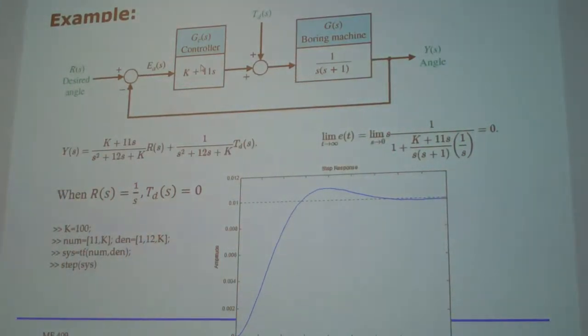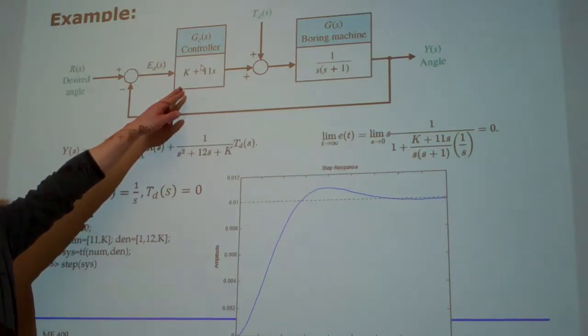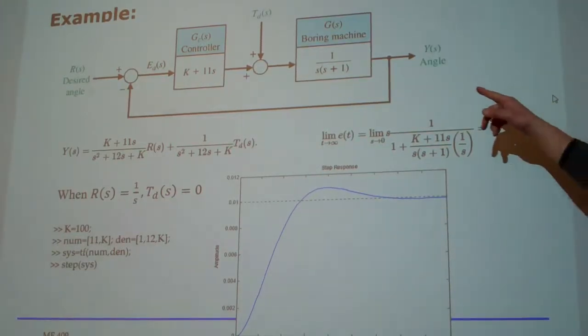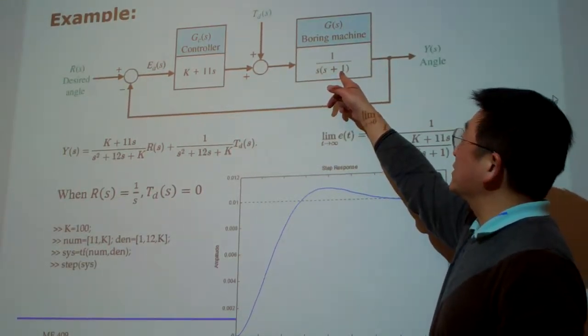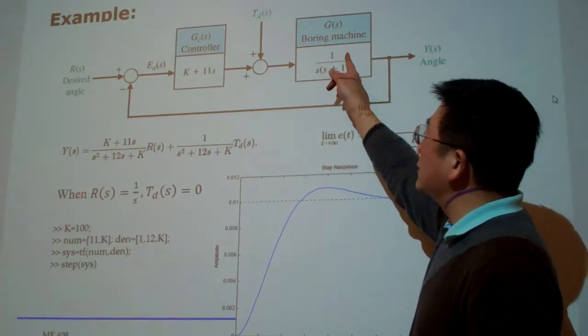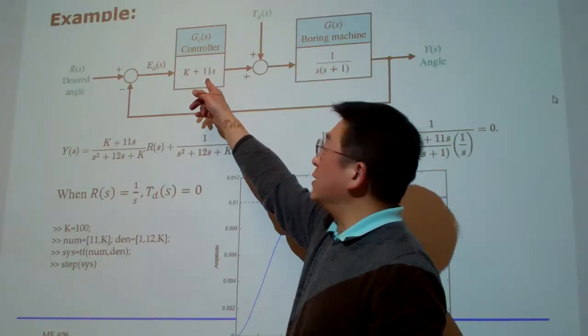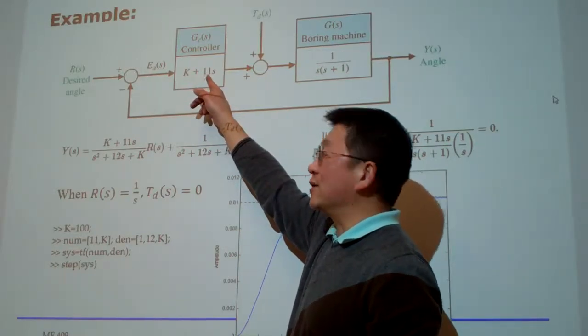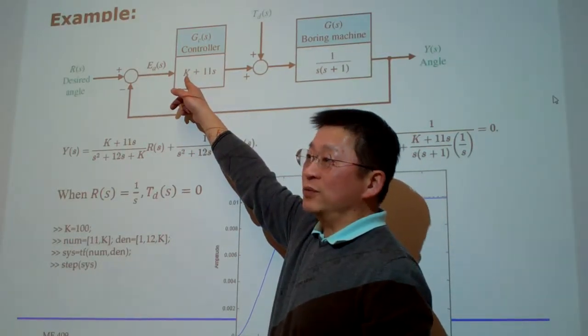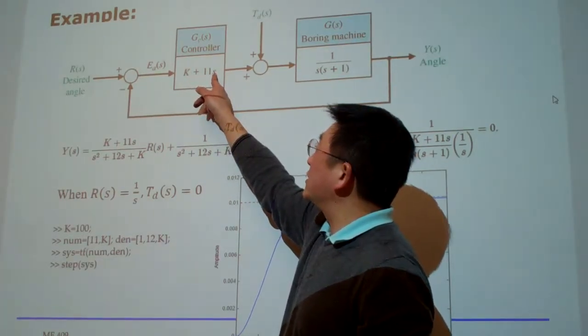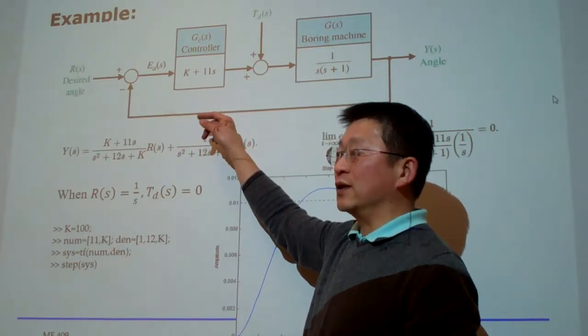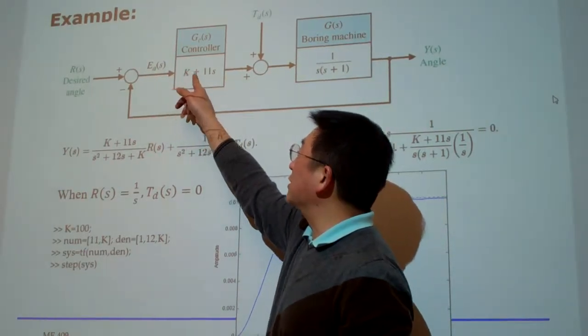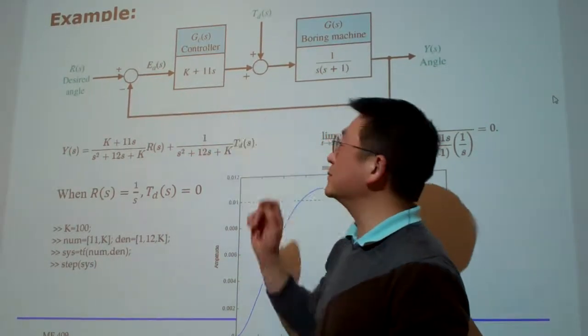This is a very practical system, the open loop system, a second order system. For example, the boring machine has some kind of controller dynamics. For example, here I can say this is the PD controller. How can I tell? This is a constant we call the position control, and this one multiplied with s. Anything multiplied with s in the time domain is derivative, which means velocity. So we call it the PD controller, position and derivative control.